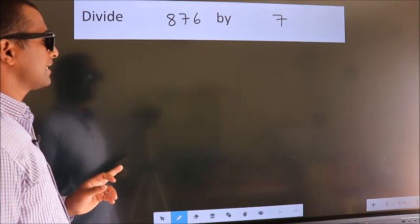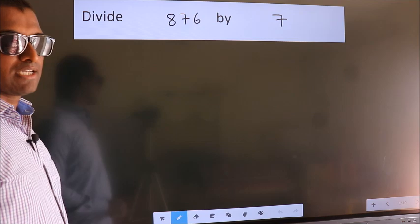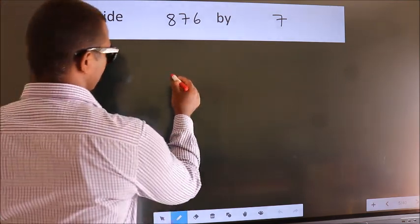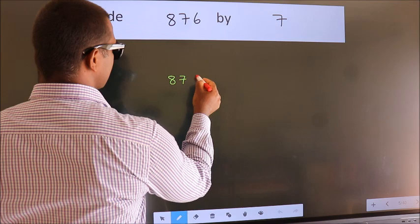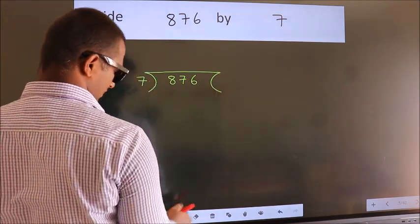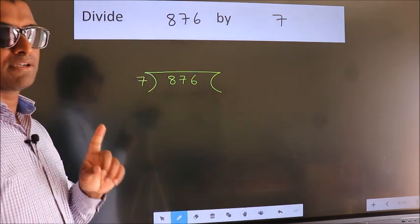Divide 876 by 7. To do this division, we should frame it in this way. 876 here, 7 here. This is your step 1.